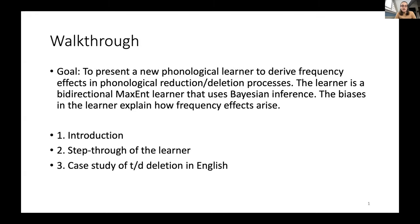Today I'll be presenting a new phonological learner that derives frequency effects — in particular, phonological reduction and deletion processes. This is a bidirectional MaxEnt learner that uses Bayesian inference. I'm hoping to show that the biases in this learner explain how frequency effects arise. I'll start with a general introduction, then go through a detailed step-through of how the learner works, and finally show results from a case study of TD deletion in English.